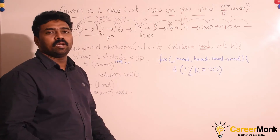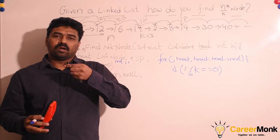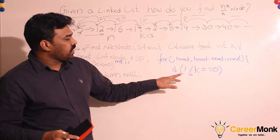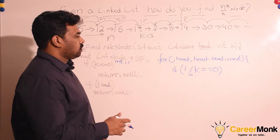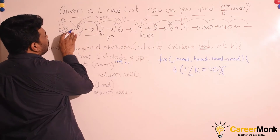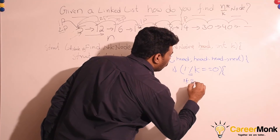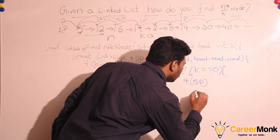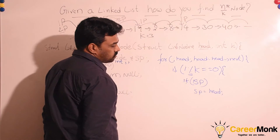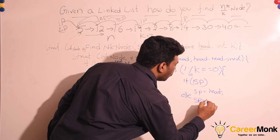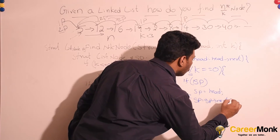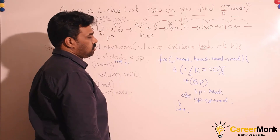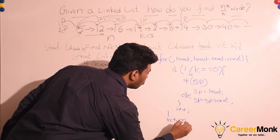When i % k == 0, it means we have completed k jumps of the first pointer. Initially the second pointer is null, so if the second pointer is null, we assign it to head — that is the initialization. Otherwise, in the else case, we increment the second pointer to the next node. We keep incrementing the value of i each iteration, and at the end we return the second pointer.